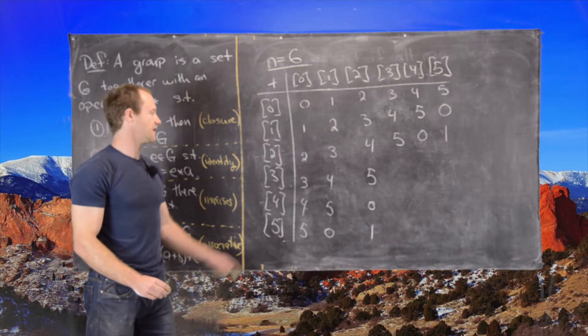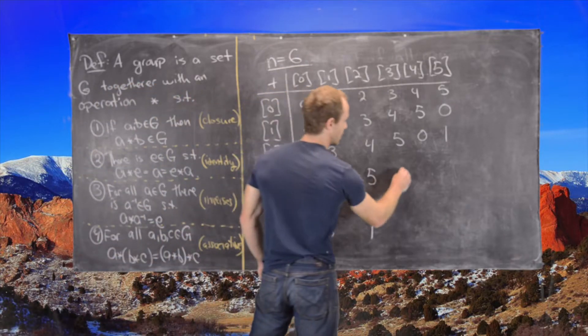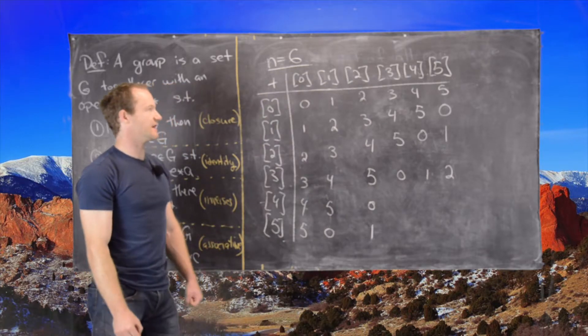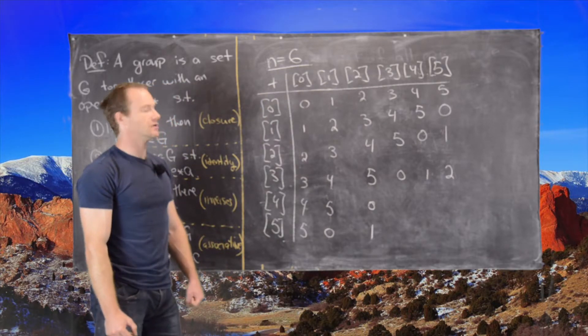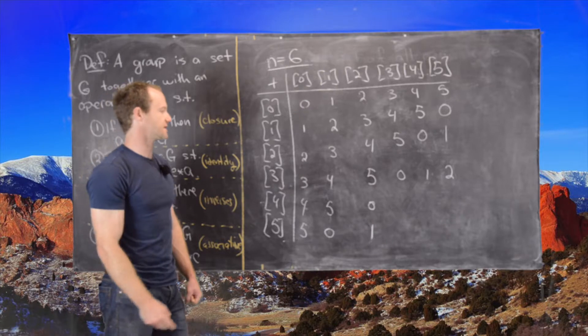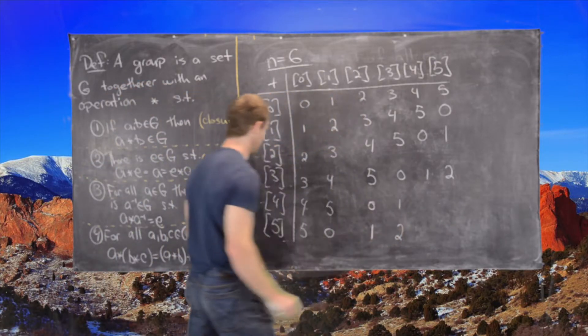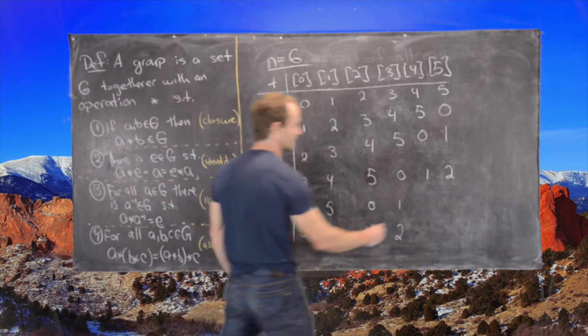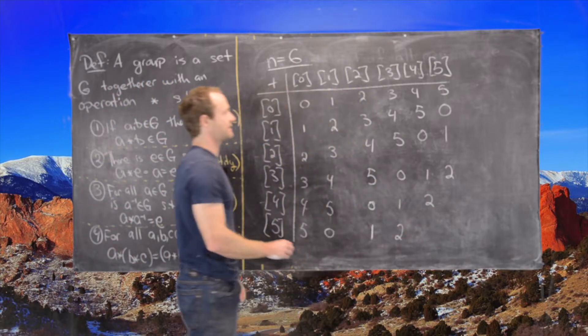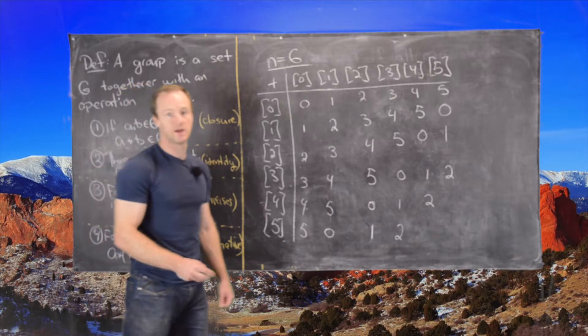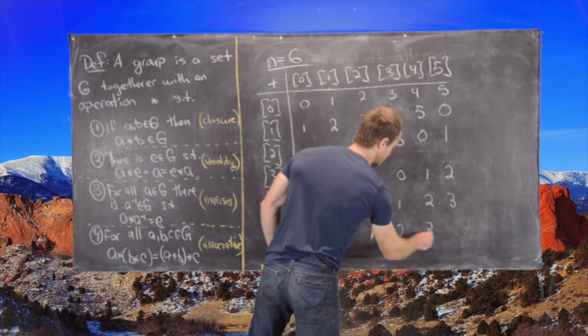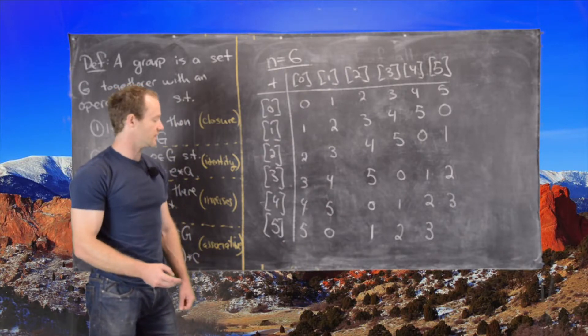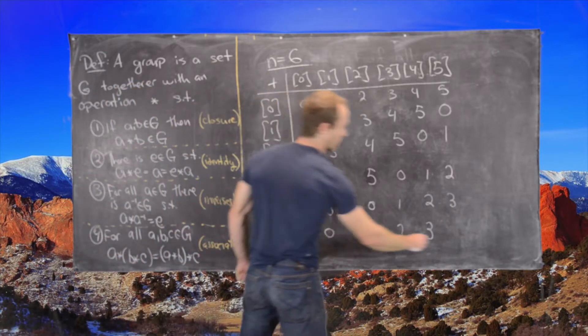And now finally we have 3 plus 3 which is 0, 1, 2. So because 3 plus 5 is 8, which is 2 mod 6. And then 1, 2. And now we can look at 4 plus 4 which is 8, which is again 2. 4 plus 5 which is 9, which is 3 mod 6. And now finally we have 5 plus 5 which is 10, which is 4 mod 6.